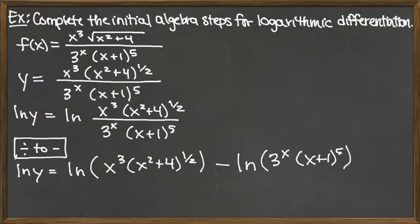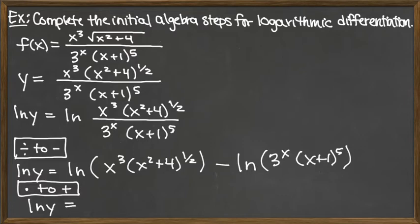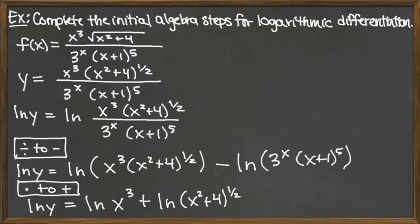Now that we've gotten rid of the fraction, within each logarithm on the right-hand side it's a product of two things, so we can split up those products into sums. We'd have the natural log of the first term in the product, which is x cubed, plus the natural log of the second term, which is x squared plus 4 to the one-half. We need to subtract, but what follows the subtraction sign will be two terms added together, because the product inside the logarithm becomes the sum of two different logarithms, so we need a grouping symbol.